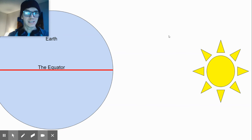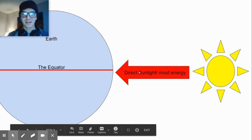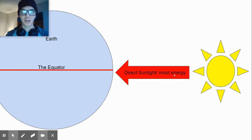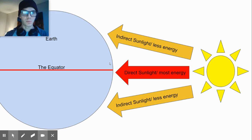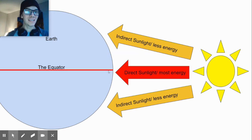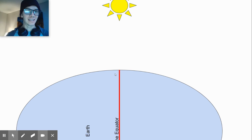These diagrams aren't to scale, but just to give you an idea of what's happening. We have the sun shining on the earth. The equator is going to receive the most direct sunlight so it's going to get the most energy and the highest temperature, while higher latitudes get indirect sunlight, less energy, and don't warm as much. So we have uneven heating of the earth's surface — let's see how that affects how air moves and the wind we experience.